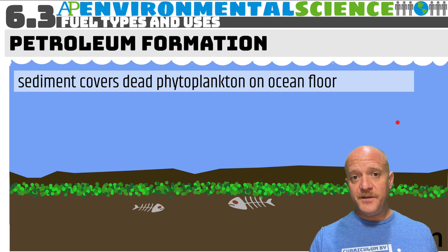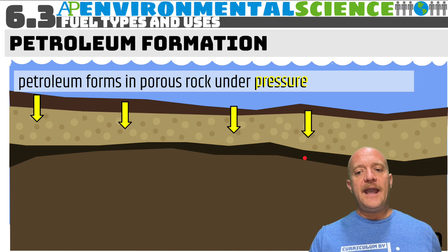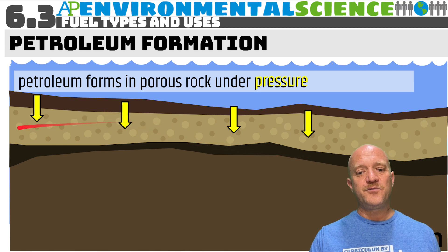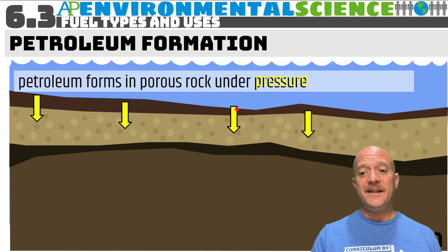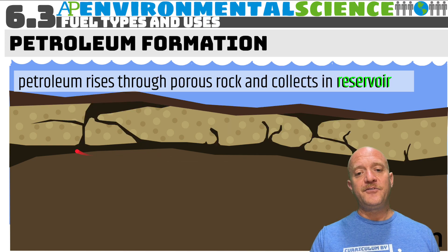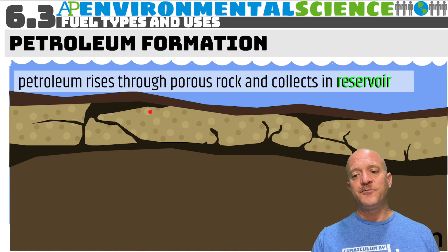Over millions of years, the sediment layers build up on top. The petroleum forms in porous rock under immense pressure — both from the ocean above and from many layers of rock. Eventually, the petroleum rises through this porous rock and collects in reservoirs, and this is where we would collect it from.